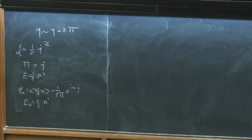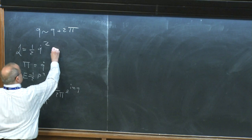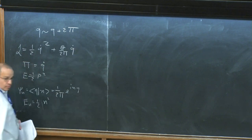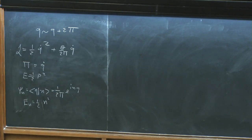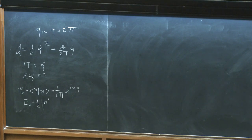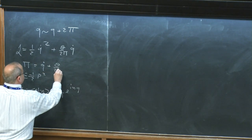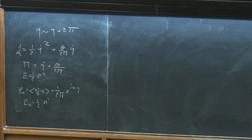Now I'll start making it slightly more complicated. I'm going to add a term to the Lagrangian: θ over 2π times Q-dot. This term classically does not do anything. The momentum, which is the derivative with respect to Q-dot, gets an extra piece θ over 2π. I promise those who have seen this analysis that there will be things here they have not seen before.